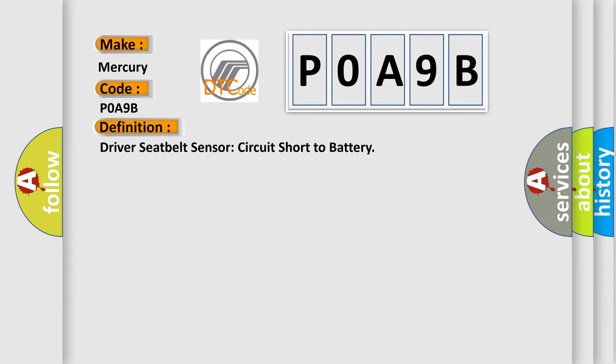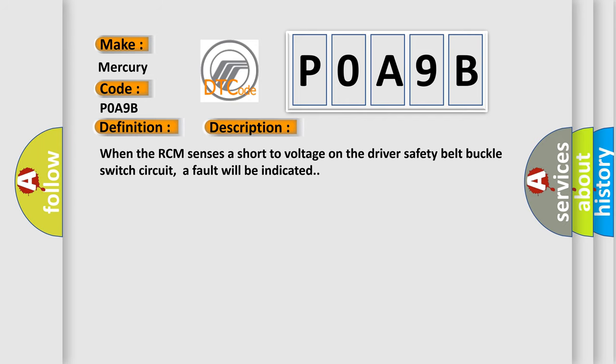And now this is a short description of this DTC code. When the RCM senses a short to voltage on the driver safety belt buckle switch circuit, a fault will be indicated.